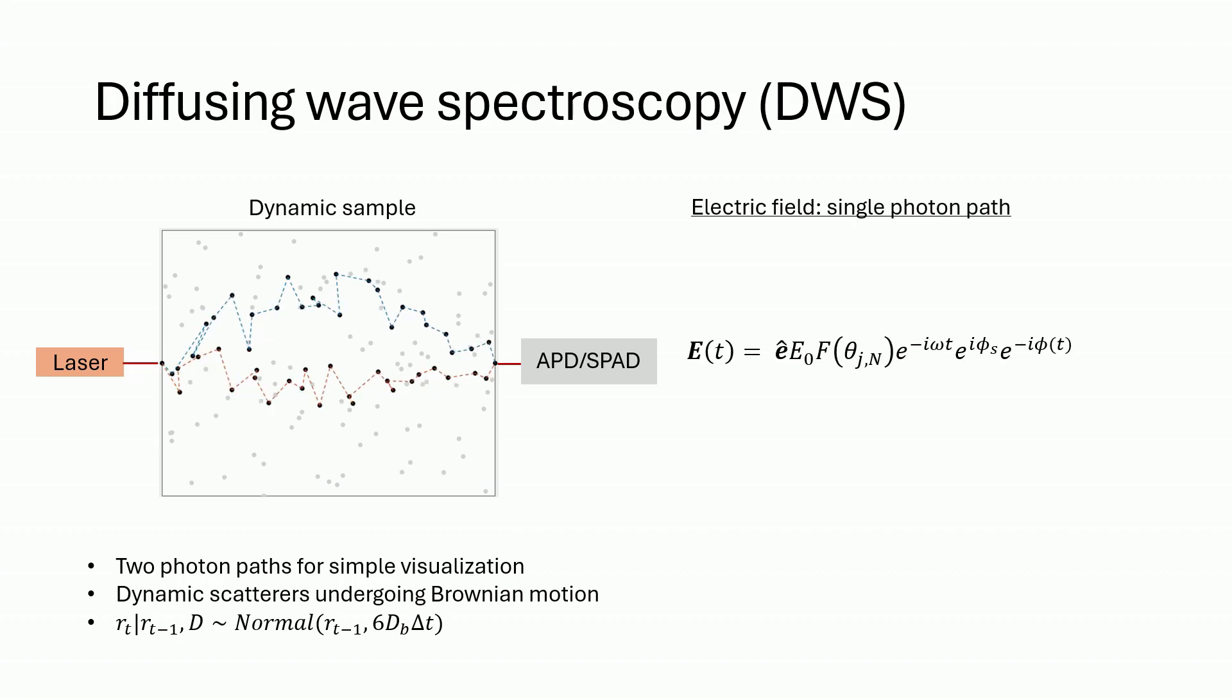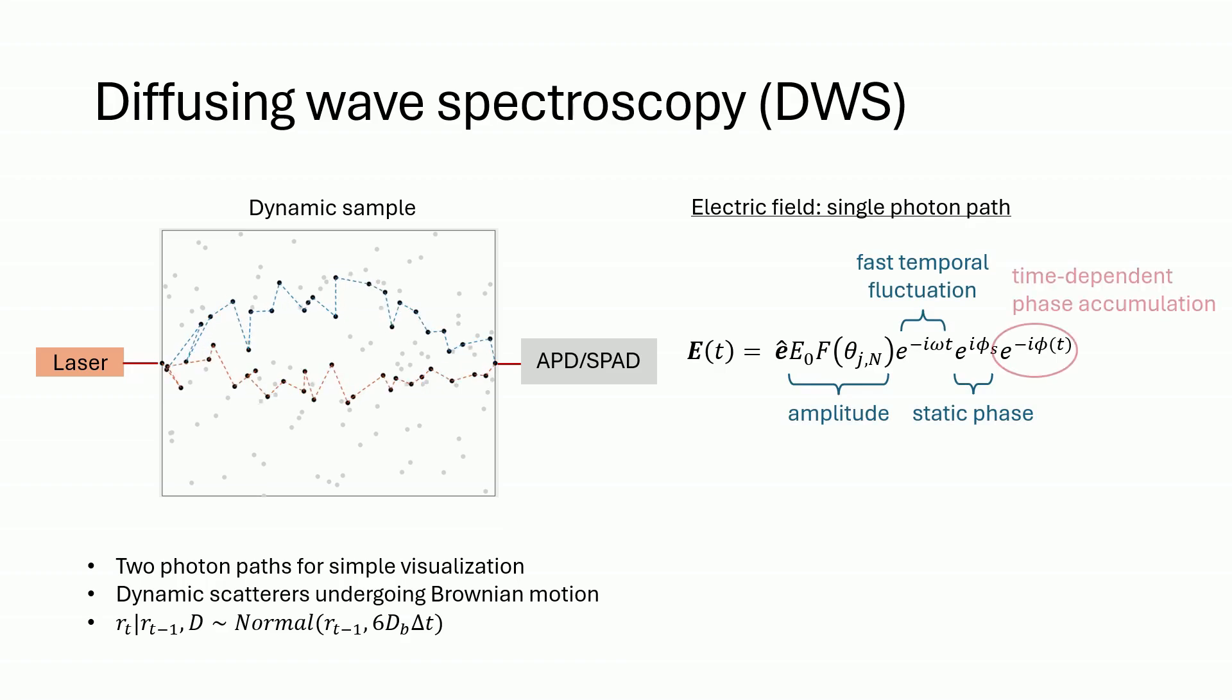Here, I show the electric field expression for a single photon path. We have terms describing the amplitude, the fast temporal fluctuation, the static phase term, and the time-dependent phase accumulation, which is what gives us the signal we are measuring.